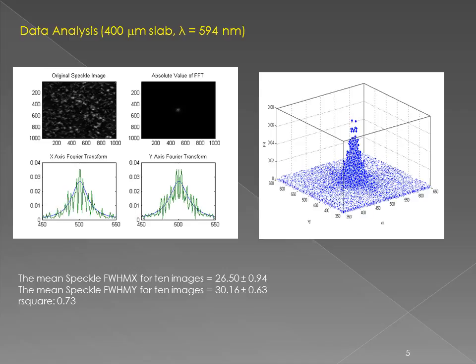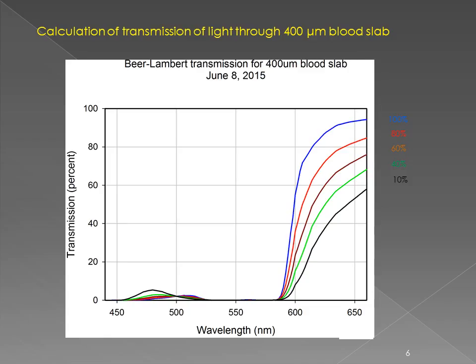This shows how the data is analyzed. This is 594 nanometer speckle. We take the two-dimensional fast Fourier transform, fit it to a two-dimensional Lorentzian function, and extract the full width at half maximum. This gives an estimate of the spatial frequency of the speckle. To predict how the speckle's spatial frequency should vary with wavelength, we first look at a calculation of the Lambert Beer Law transmission through a 400 micron slab of blood for oxygen saturations of 100, 80, 60, 40, and 10 percent, over wavelengths from 450 to 650 nanometers on the horizontal axis.